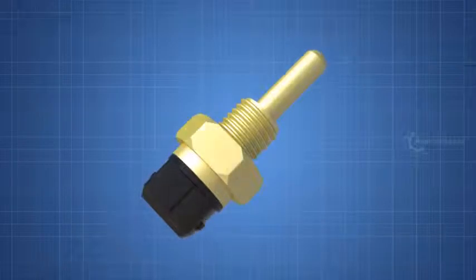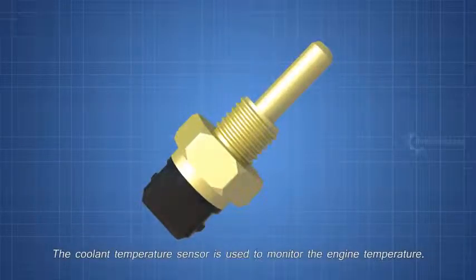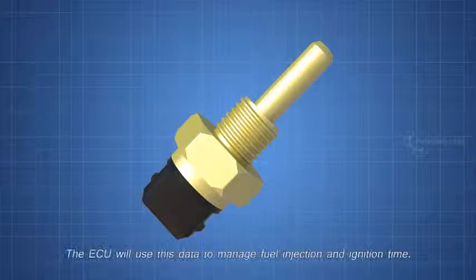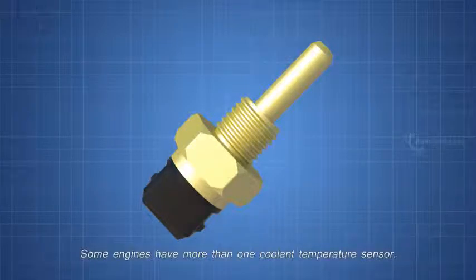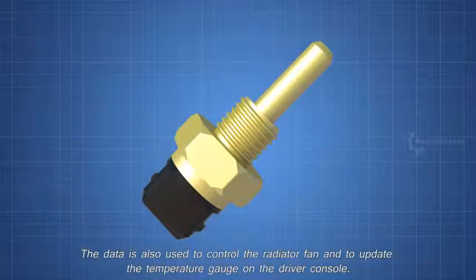Next, the coolant temperature sensor. The coolant temperature sensor is used to monitor the engine temperature. The ECU will use this data to manage fuel injection and ignition time. Some engines have more than one coolant temperature sensor.